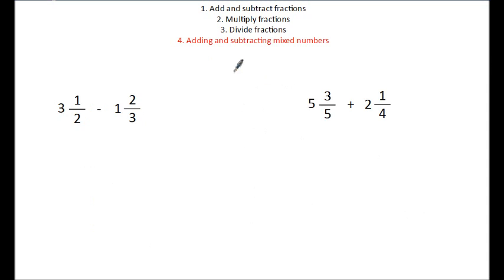The last section is looking at adding and subtracting mixed numbers. When you're adding and subtracting mixed numbers, what you're doing is you're taking the whole number here and the fraction and the whole number here and the fraction as one whole number. So 3 and a half and 1 and 2 thirds.